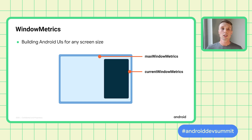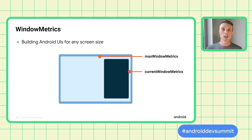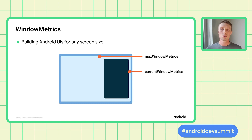On the Samsung Galaxy Z Fold series, we've seen a 7x increase in split screen usage. Another example is when the window is letterboxed on a large display in a different orientation. The window metrics API returns the correct pixel size of the window in all possible states and brings this capability all the way back to SDK level 14. It also informs you about the maximum possible metrics if the user expands the application display, so that you can select the right resources to load ahead of time.